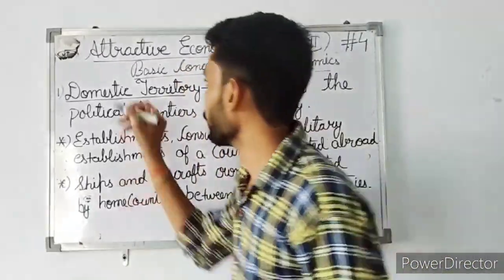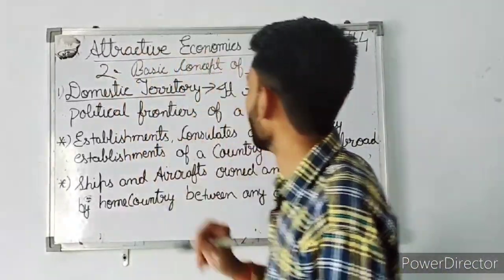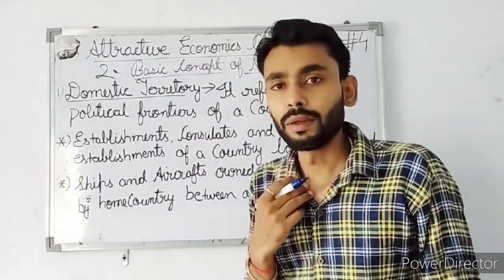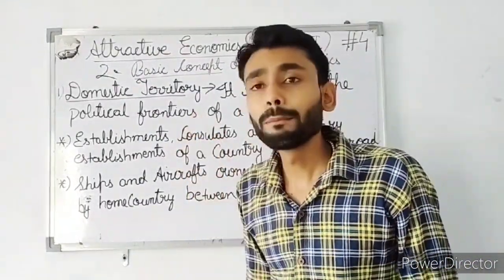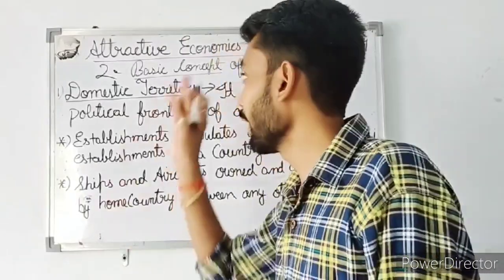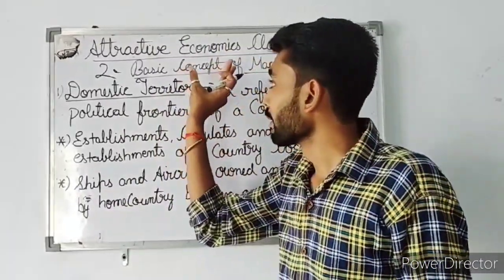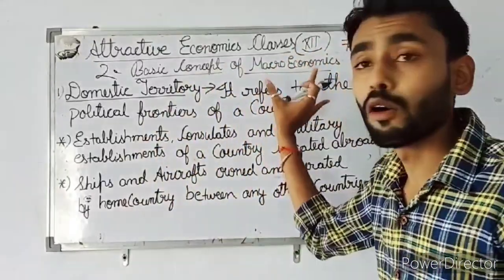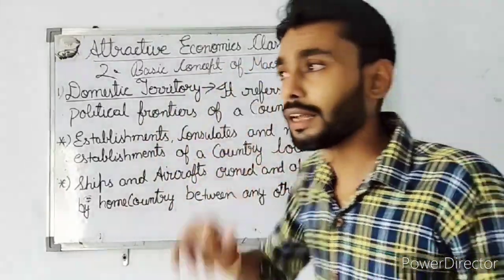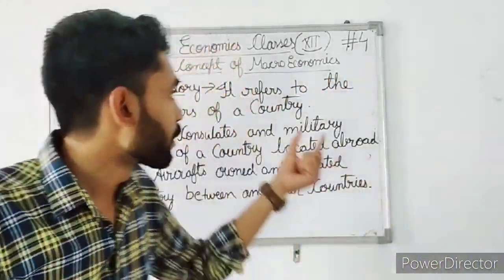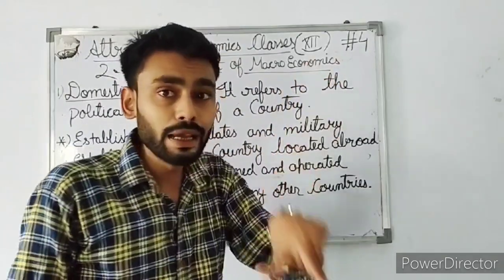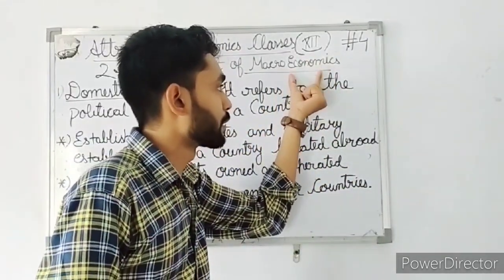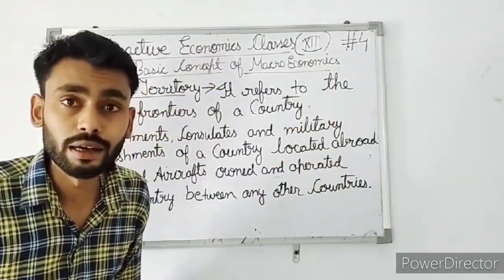Now this is our chapter number 2, that is basic concepts of macro economics. Chapter number 2 is basic concepts of macro economics, and it is also the basic concept of national income. From this chapter, our national income topic is started.